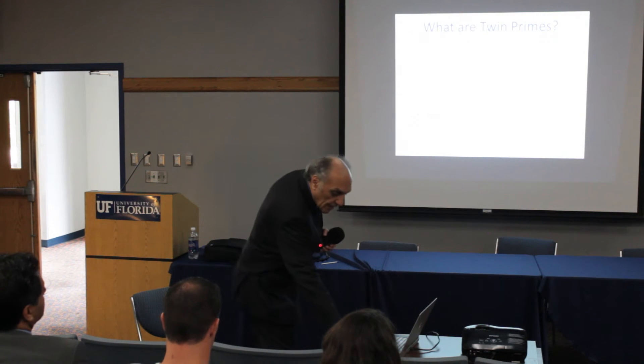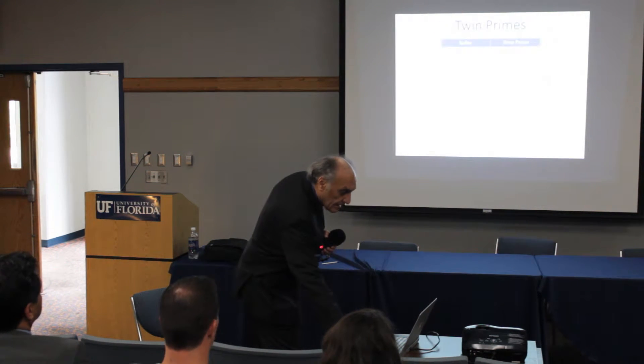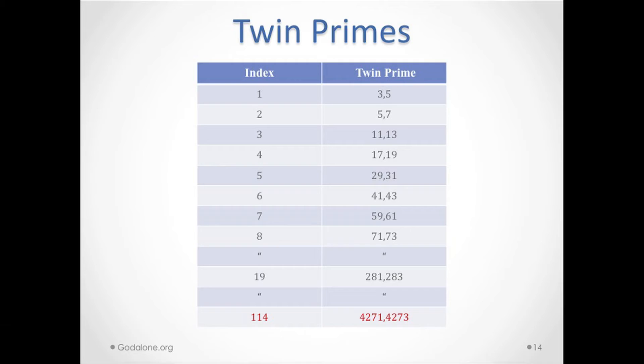Now let's see how complicated things get. I tabulated these twin primes. As you see, the 19th twin prime pair is 281 and 283, and the 114th pair is 4271 and 4273.